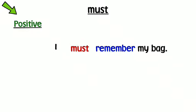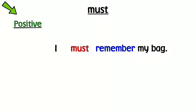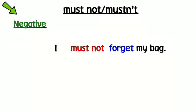We form positive sentences with must like this. We form negative sentences with must not like this. The form is the same for all subjects. We often use the short form of must not: mustn't.